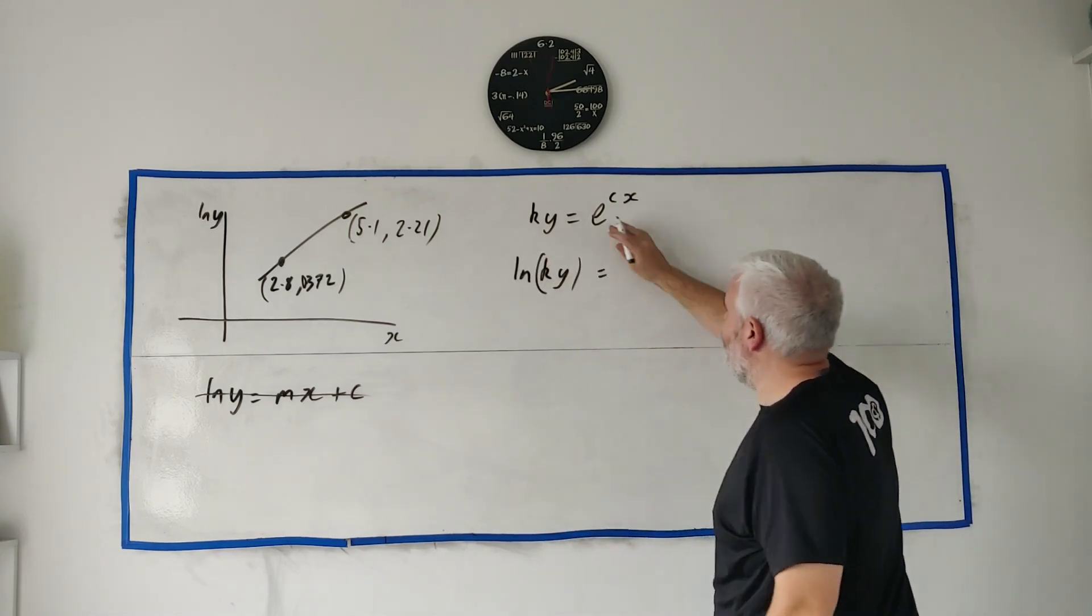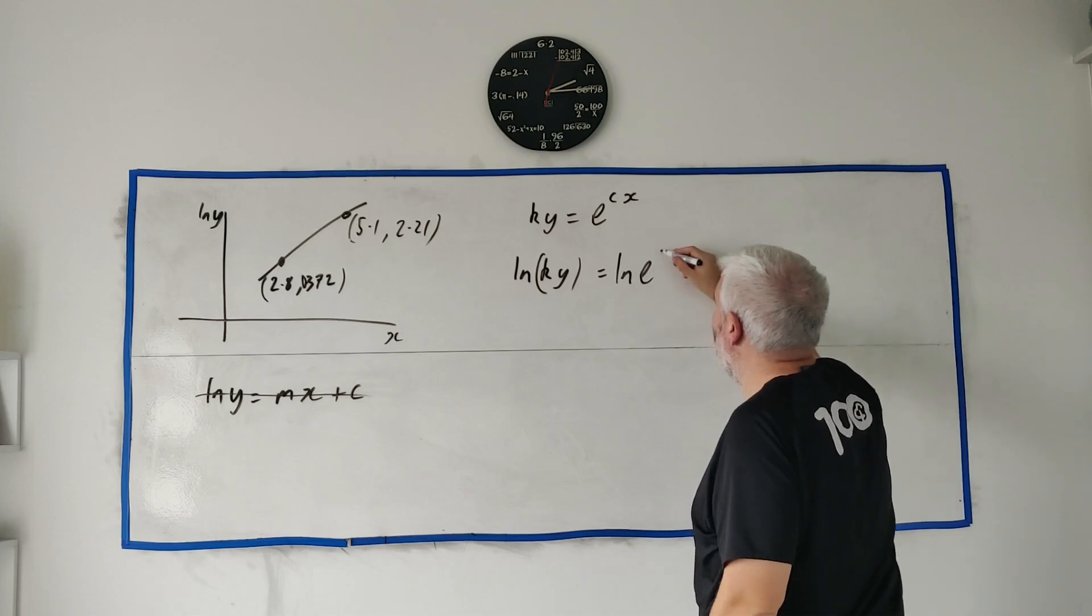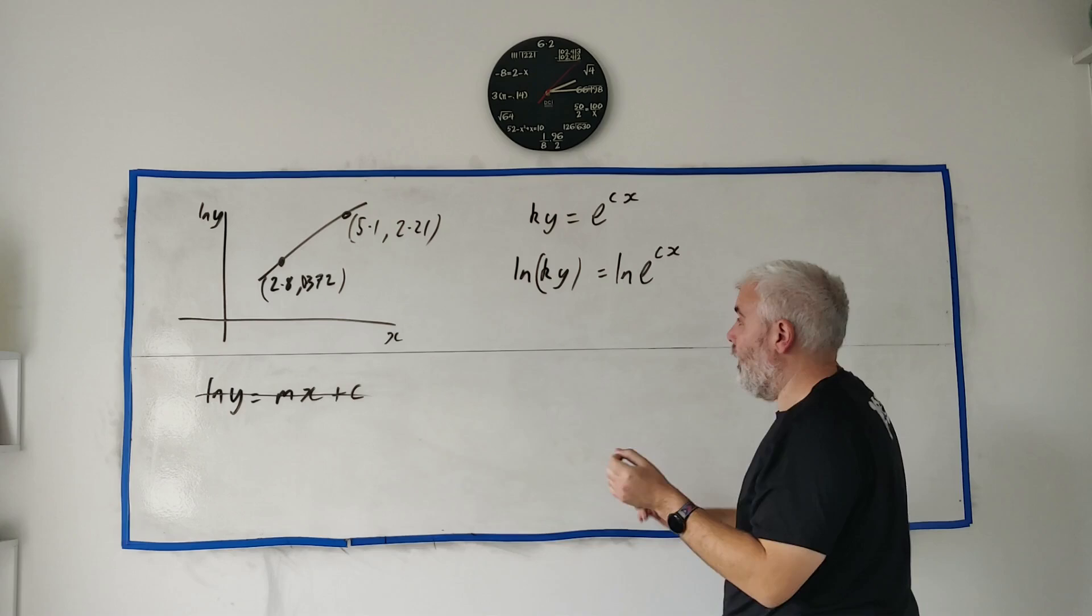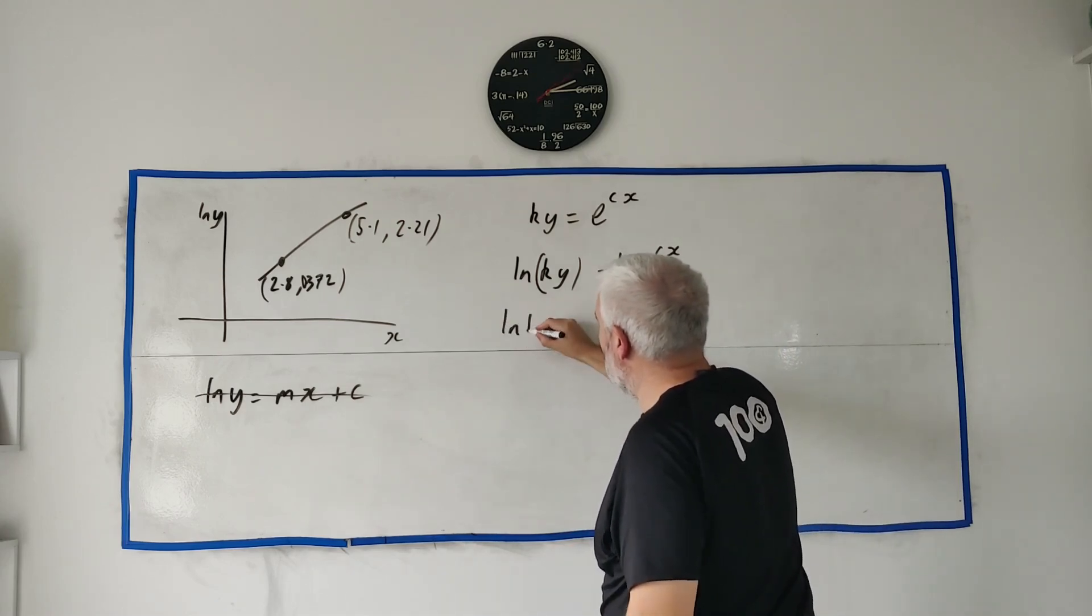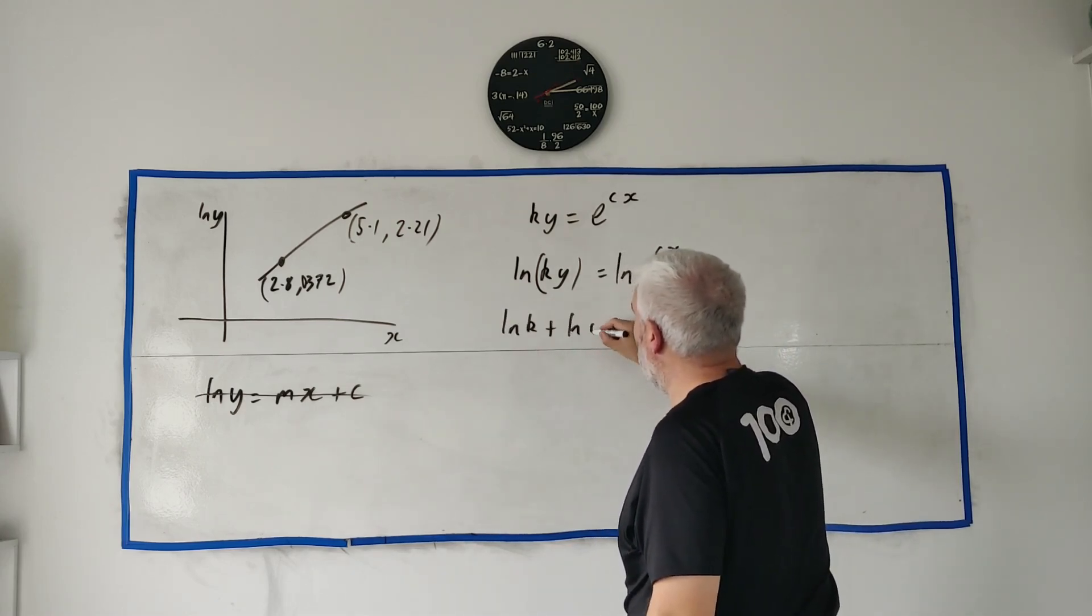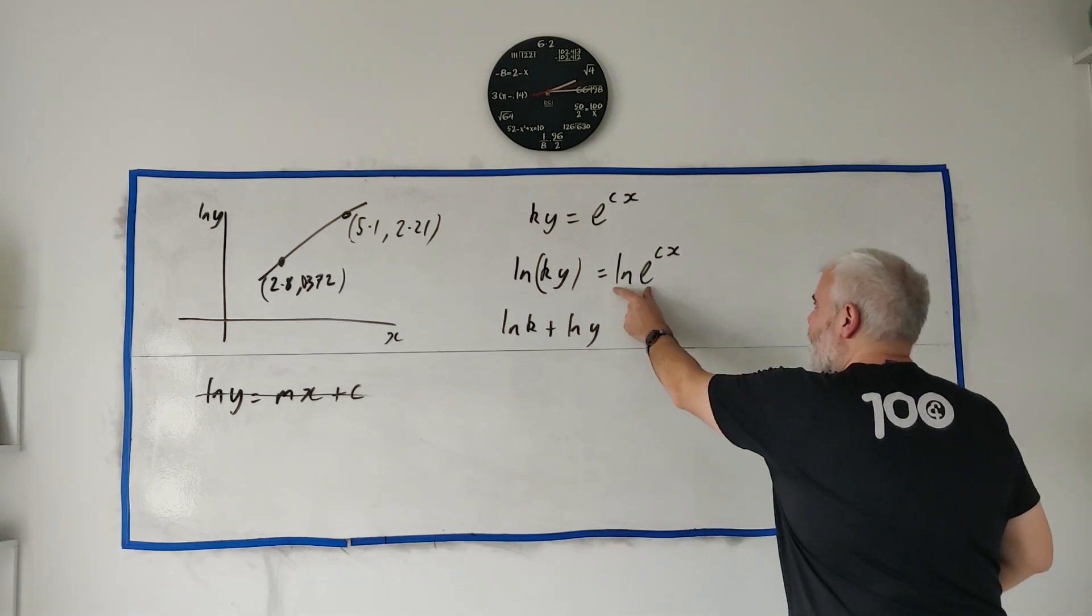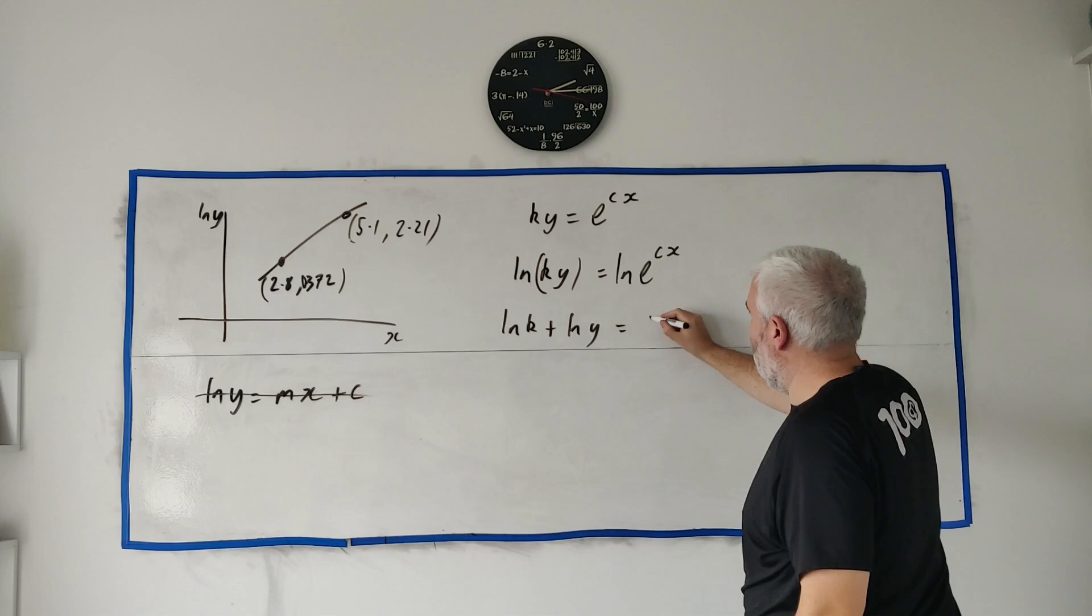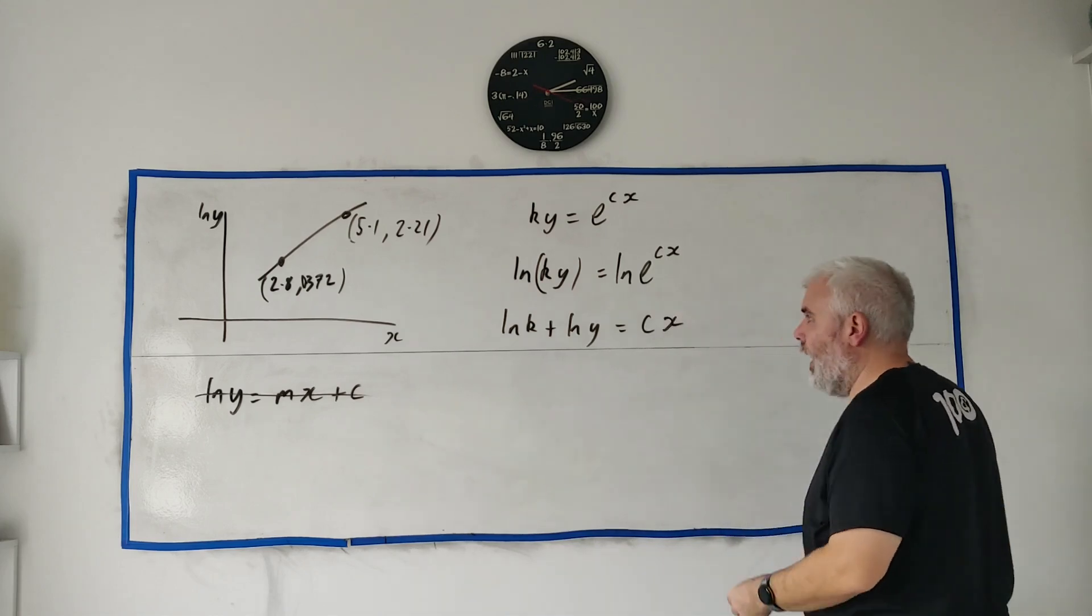Natural log of ky equals—let me write it all out—natural log of e to the cx. So natural log of two numbers multiplying, we can write that as natural log of k plus natural log of y, and natural log of the exponential just destroy each other and leave what's up here: that's cx.